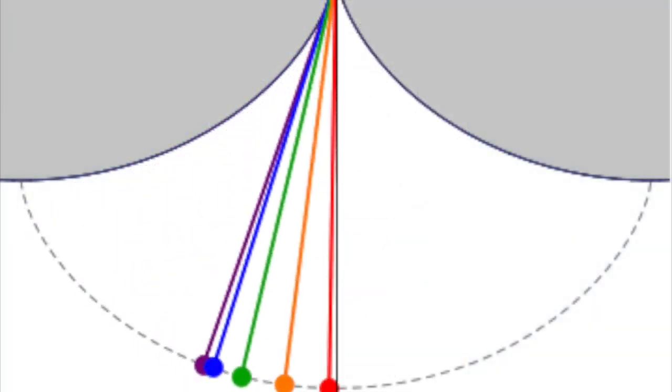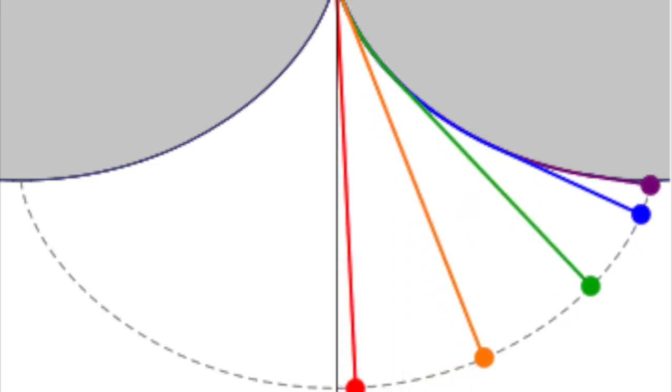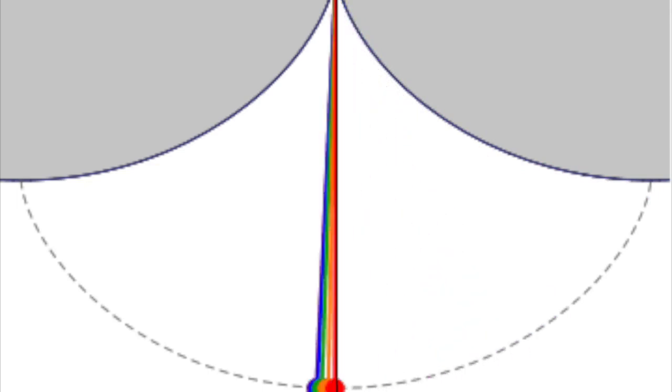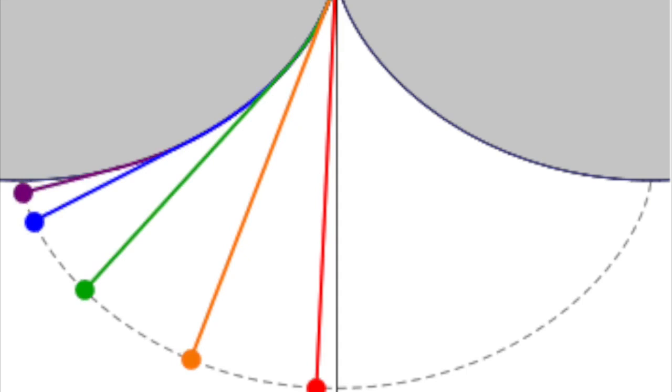So if you were to upturn a cycloid, making it like an inverted arch, and then release a marble from any point on it, it would take exactly the same time to reach the bottom, no matter where on the curve you started from.